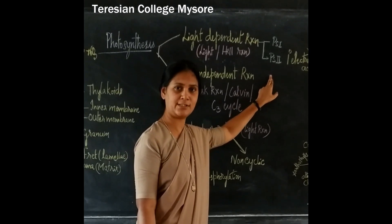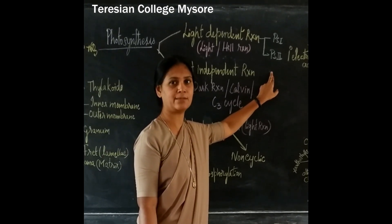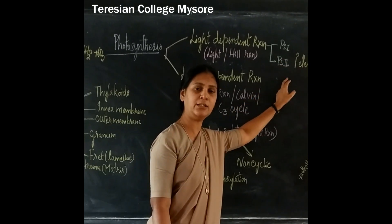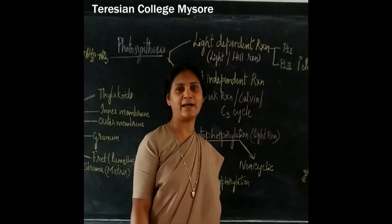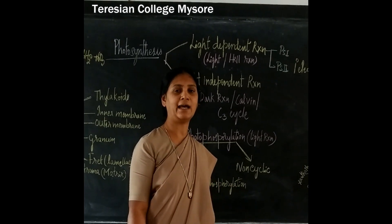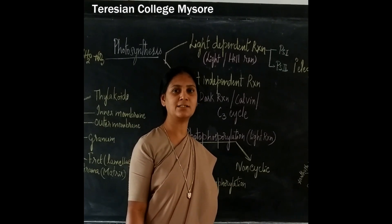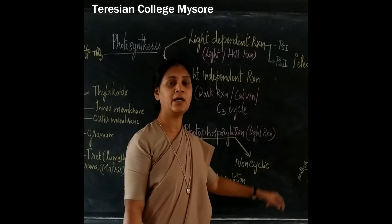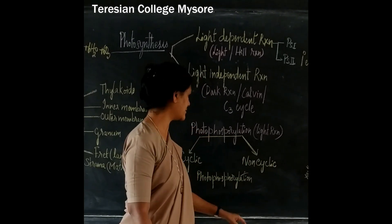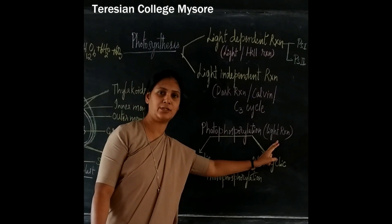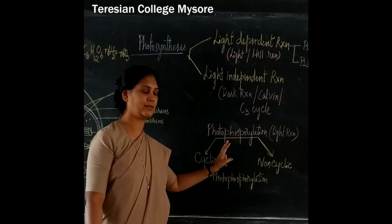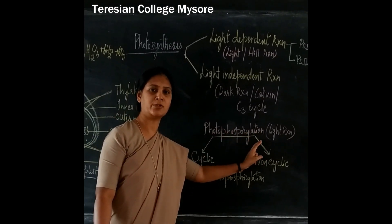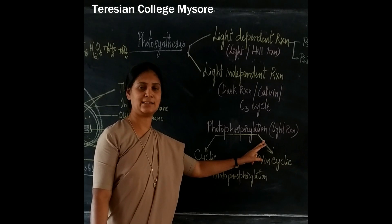Photosystem 1 and photosystem 2 are also called as pigment system 1 and pigment system 2. The difference between these two systems is based on the number of accessibility elements, electron transport capacity, and absorption of the light at different wavelengths. The light reaction is also called as photophosphorylation. Photo means light.